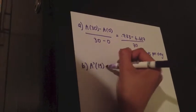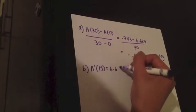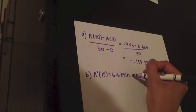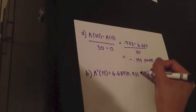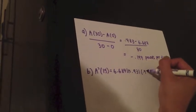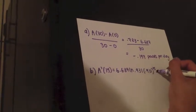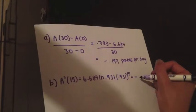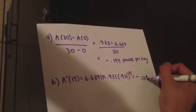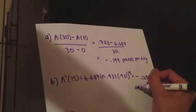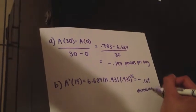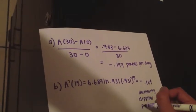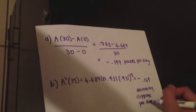To find the value of a prime of 15, you have to first find the derivative of a of t and then substitute t for 15. That gives us an answer of negative 0.164, which means that the amount of clippings is decreasing at a rate of 0.164 pounds per day at t equals 15.